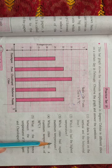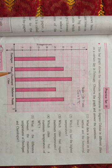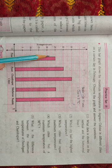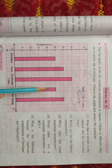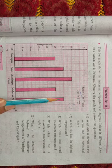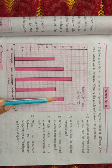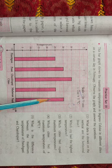Next question: which cities had equal maximum temperature? So which cities have the same temperature? Panjgani and Matheran both have 25 degrees, so they are equal. Similarly, the second pair is Pune and Nashik — Pune has 30 and Nashik also has 30. So these are the answers.